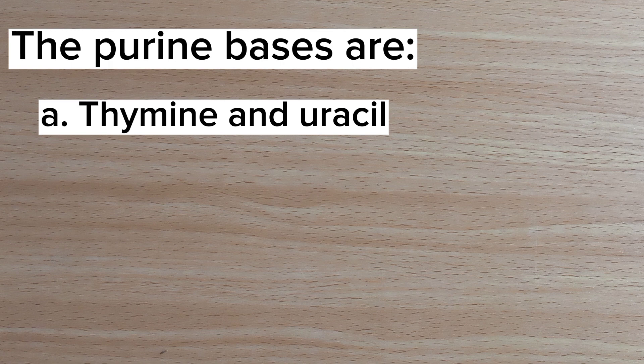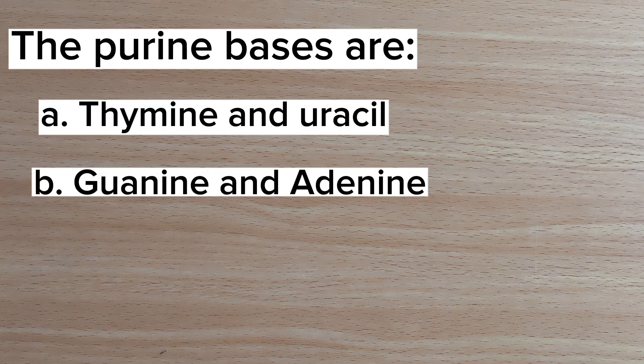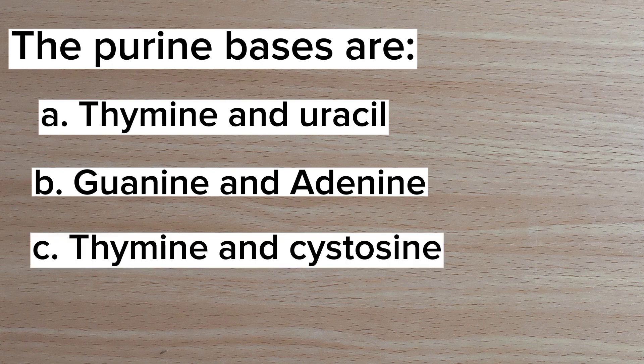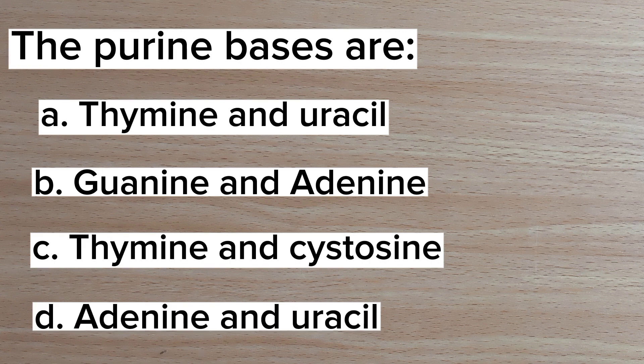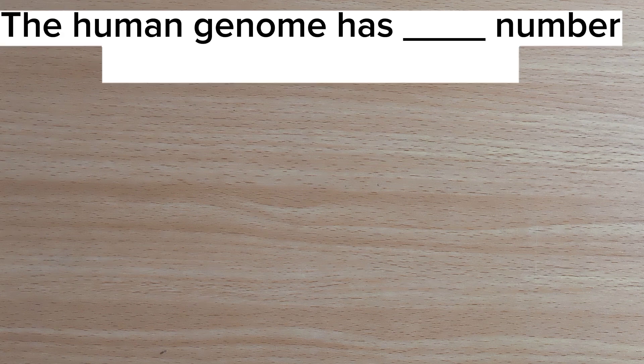Number eight: the purine bases are — A. Thymine and Uracil, B. Guanine and Adenine, C. Thymine and Cytosine, D. Adenine and Uracil. Answer: B. Guanine and Adenine.